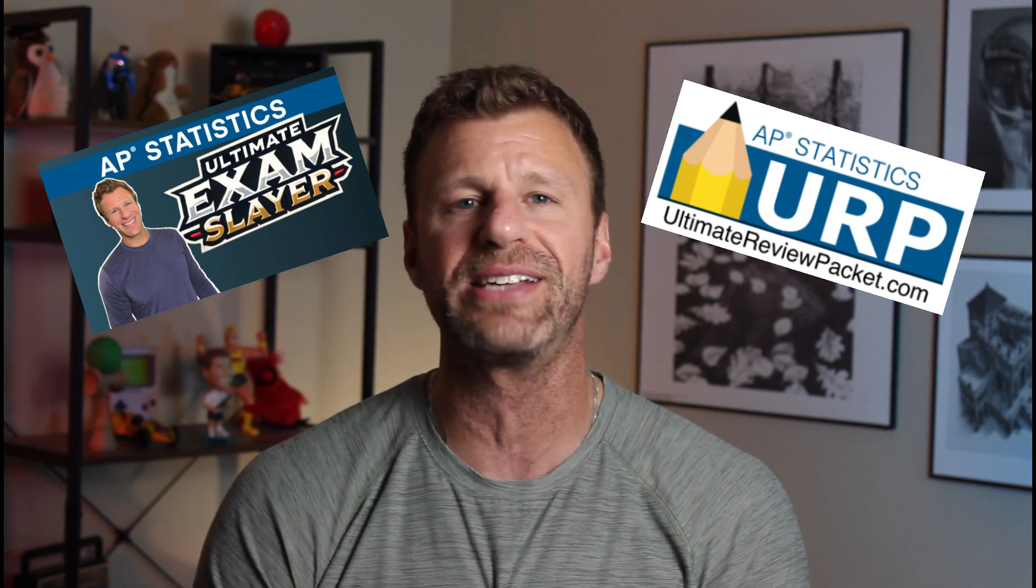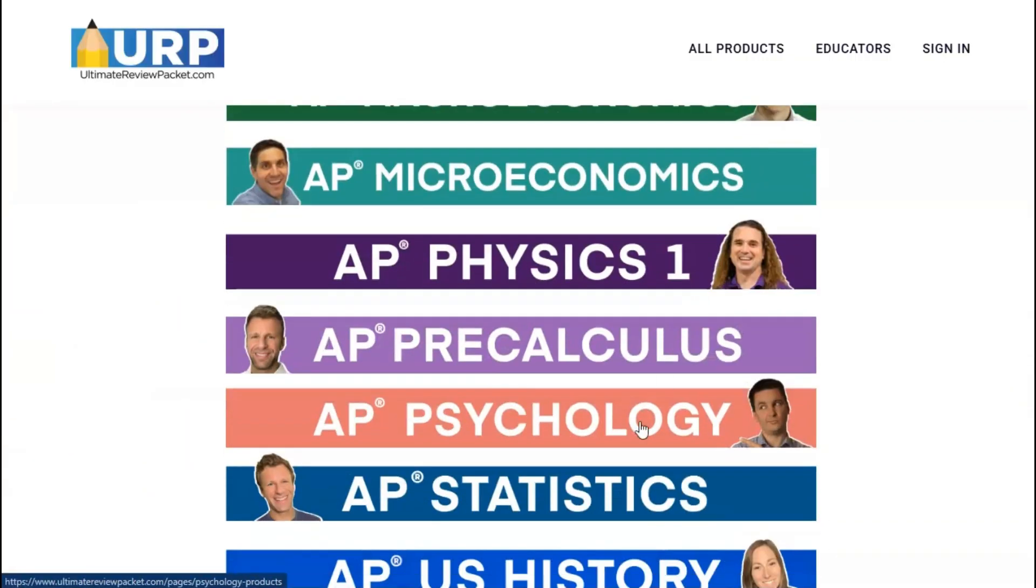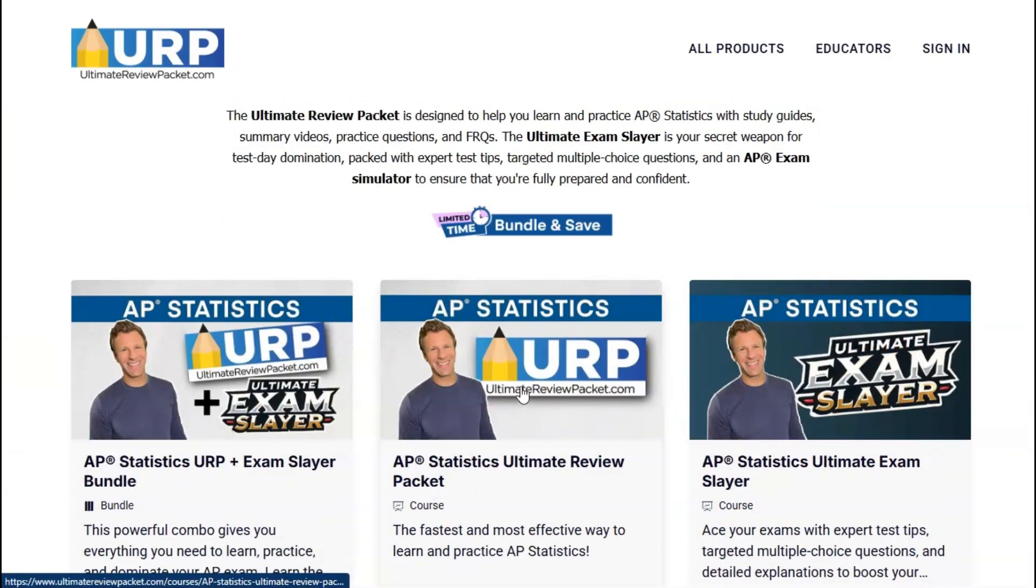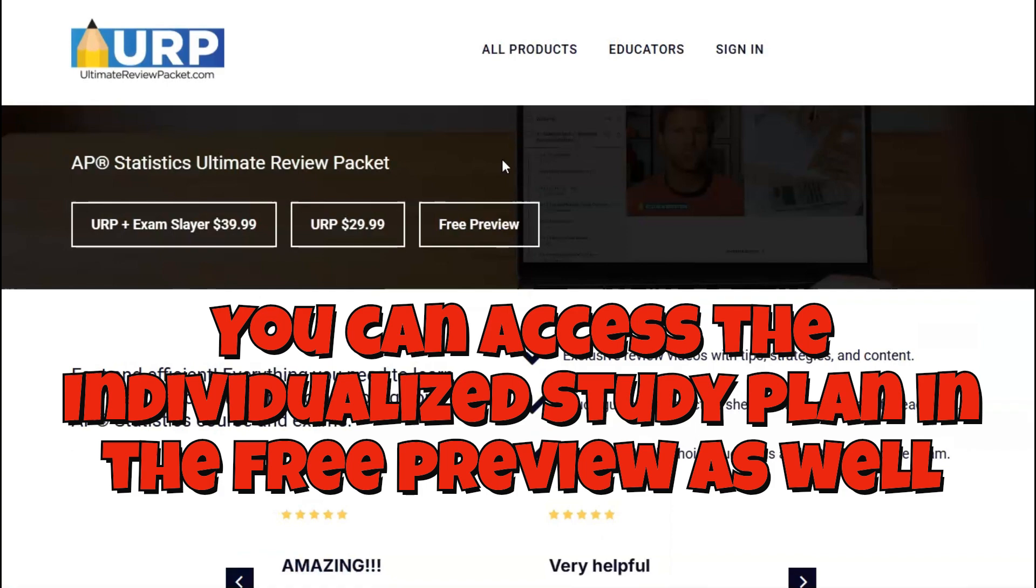Now, to access what's in this individualized study plan, you are going to need the ultimate review packet and the ultimate exam slayer. Now, if you're wondering what are those, well, they are gonna be your ticket to success on the AP exam. So head on over to ultimatereviewpacket.com, scroll down and find AP statistics, and you will have access to the ultimate exam slayer and the ultimate review packet.